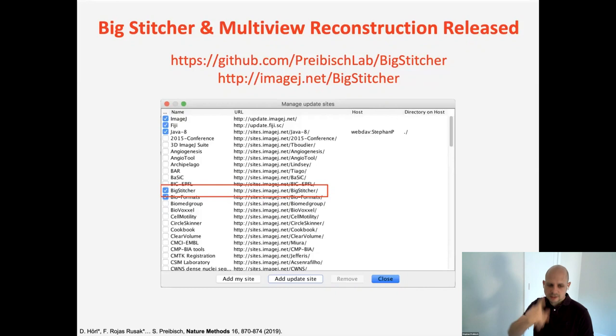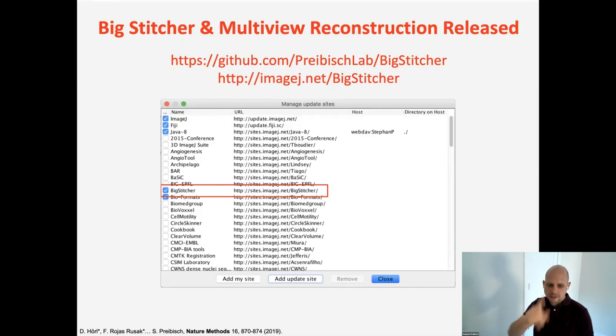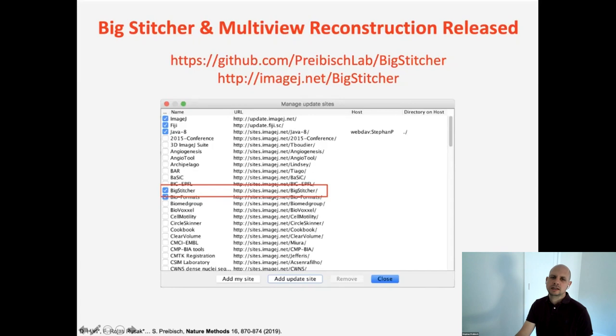Big Stitcher and all these things I showed, except for the shear dataset that is not in there yet, is available on the Big Stitcher update site. There's also an associated paper. There's documentation that gets you started. If you want certain features that you think you're really interested in, just shoot us an email and we can also prioritize one thing over the other.